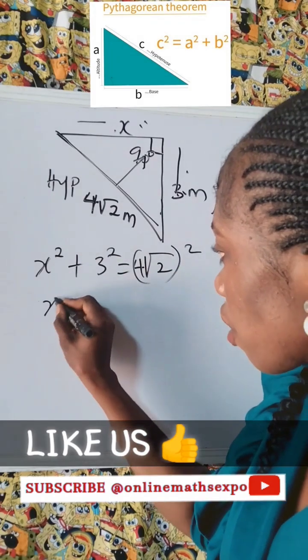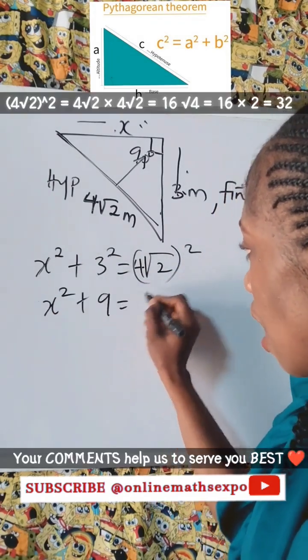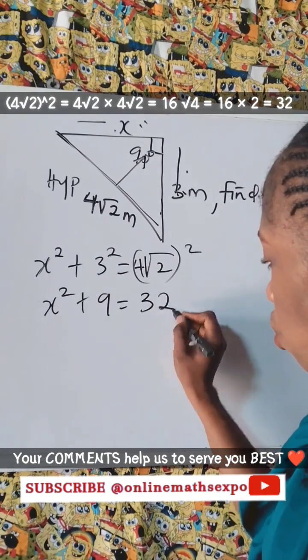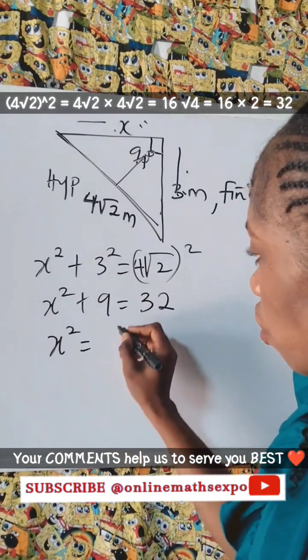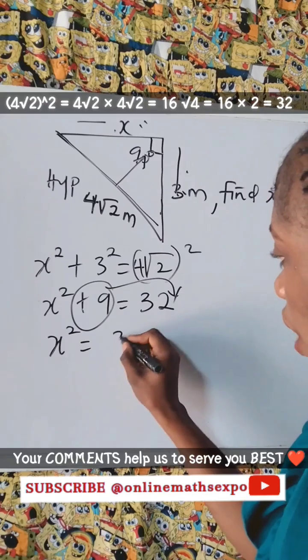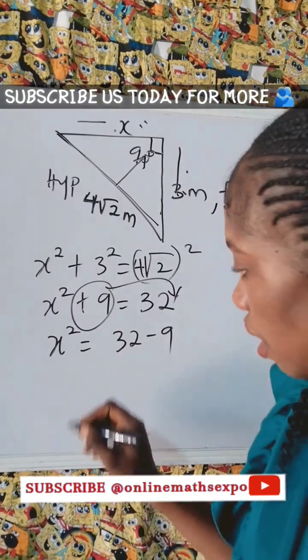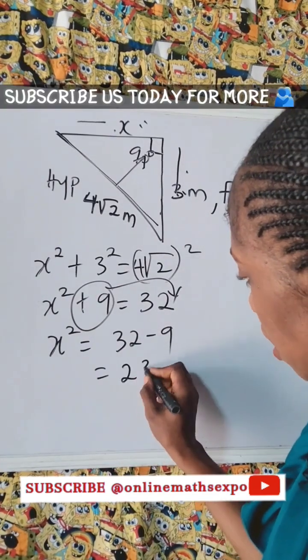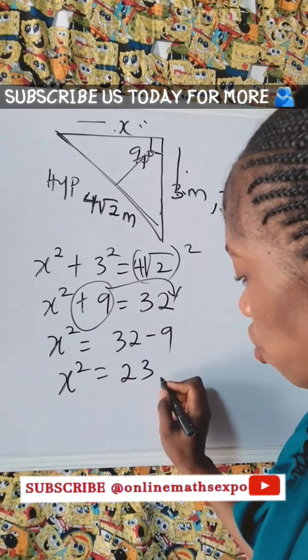Okay, 3 squared, this will give us x squared plus 9. And this will give us 32. So we have x squared is equal to, move this here, 32 minus 9. And that will give us 23. So we have x squared is 23.